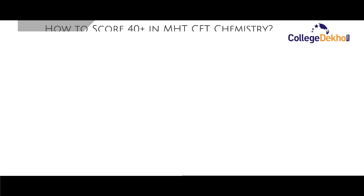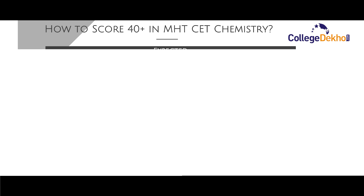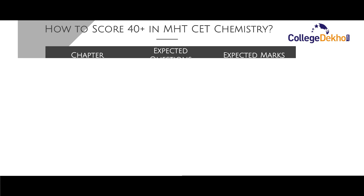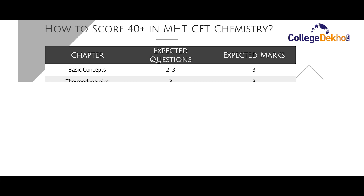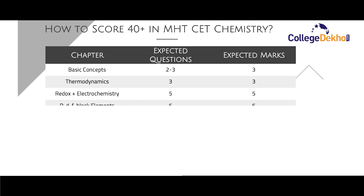Now let us look at how to score 40 plus marks in MHT CET for Chemistry. The Chemistry section will comprise 50 questions for 50 marks, and it is easy to get 40 plus marks by revising the most important topics. For Basic Concepts, you can expect 2 to 3 questions for 2 to 3 marks. For Thermodynamics, you can expect 3 questions for 3 marks.